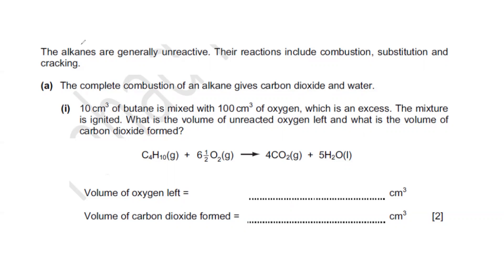In this question, alkanes are generally unreactive and their reactions include combustion, substitution, and cracking. The complete combustion of an alkane gives carbon dioxide and water. 10 cm³ of butane — it's called 'but' because there are 4 carbons and a single bond — is mixed with 100 cm³ of oxygen, which is in excess, as stated in the question.